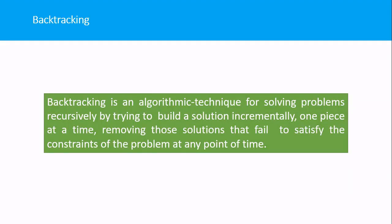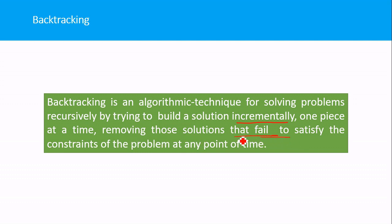Backtracking is an algorithm design technique for solving problems recursively by trying to build a solution incrementally, one piece at a time, and removing those solutions that fail to satisfy the constraints of the problem at any point in time. The backtracking technique will build the solution incrementally, and during the building process, if it finds any solution that fails to satisfy the constraint, it will remove that solution and try the next choice.